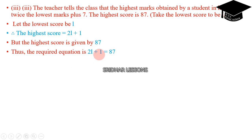So 2L plus 7. I am sorry, this was a typographic mistake. 2L plus 7 equals 87.